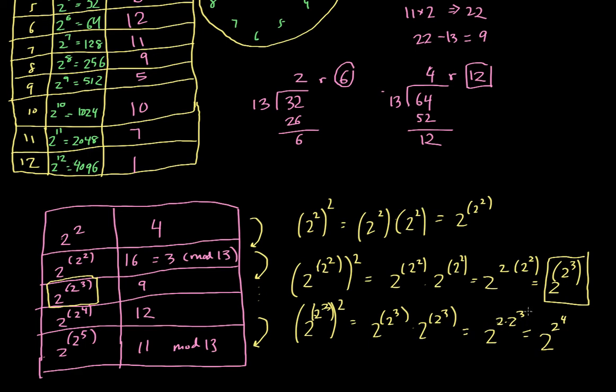I'm basically multiplying by 2 one more time, so I have to add 1 to the exponent. You can see that this matches what's in the next row right here.